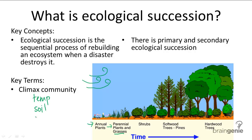For example, if you were to have a really dry environment where ecological succession occurs, the final community would be a lot different from if ecological succession occurred in a really moist environment. The general timeframe for ecological succession from start to finish is approximately 1,000 years.